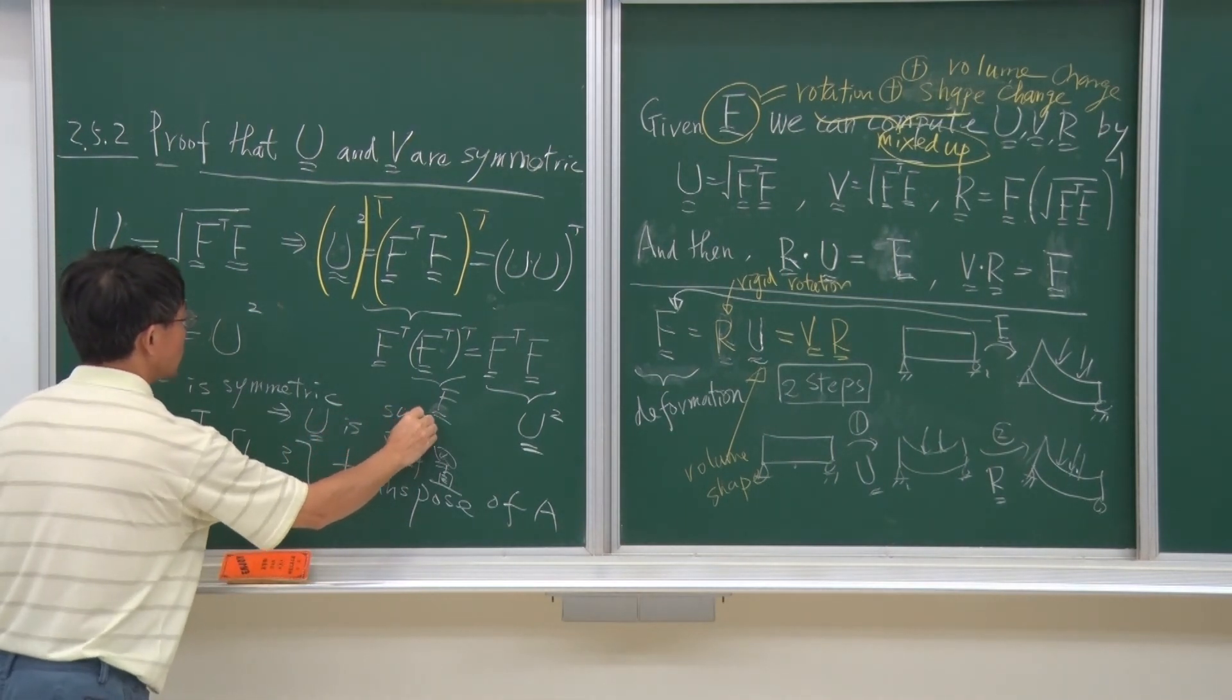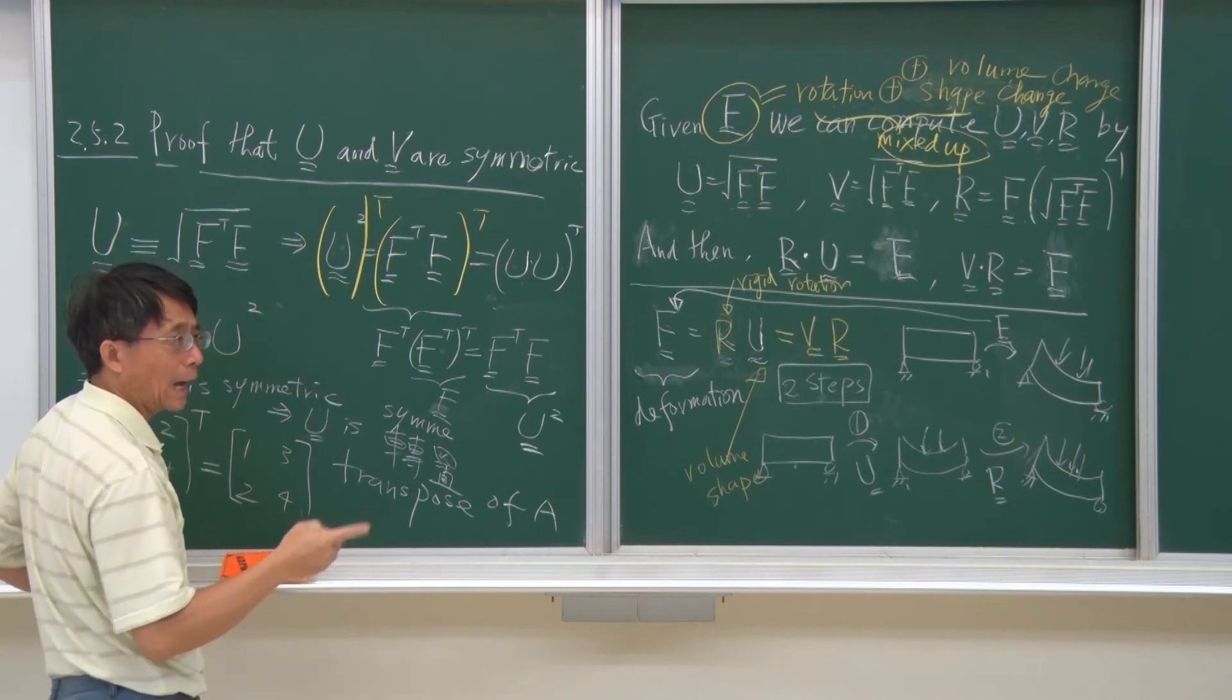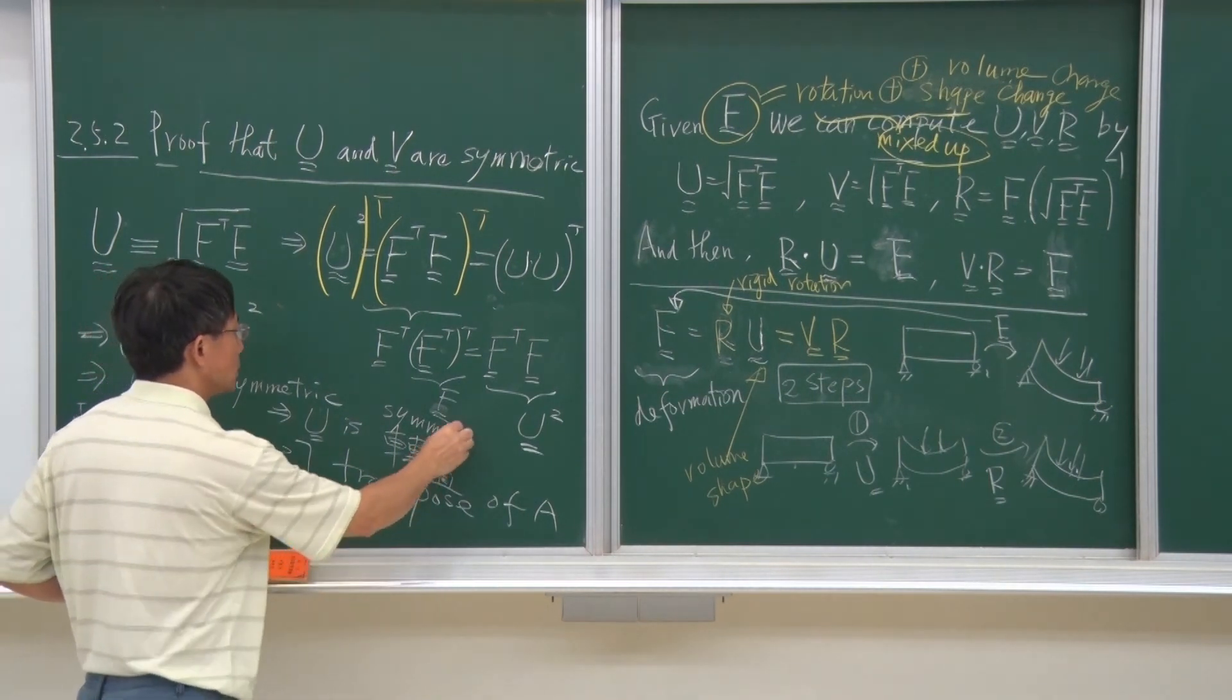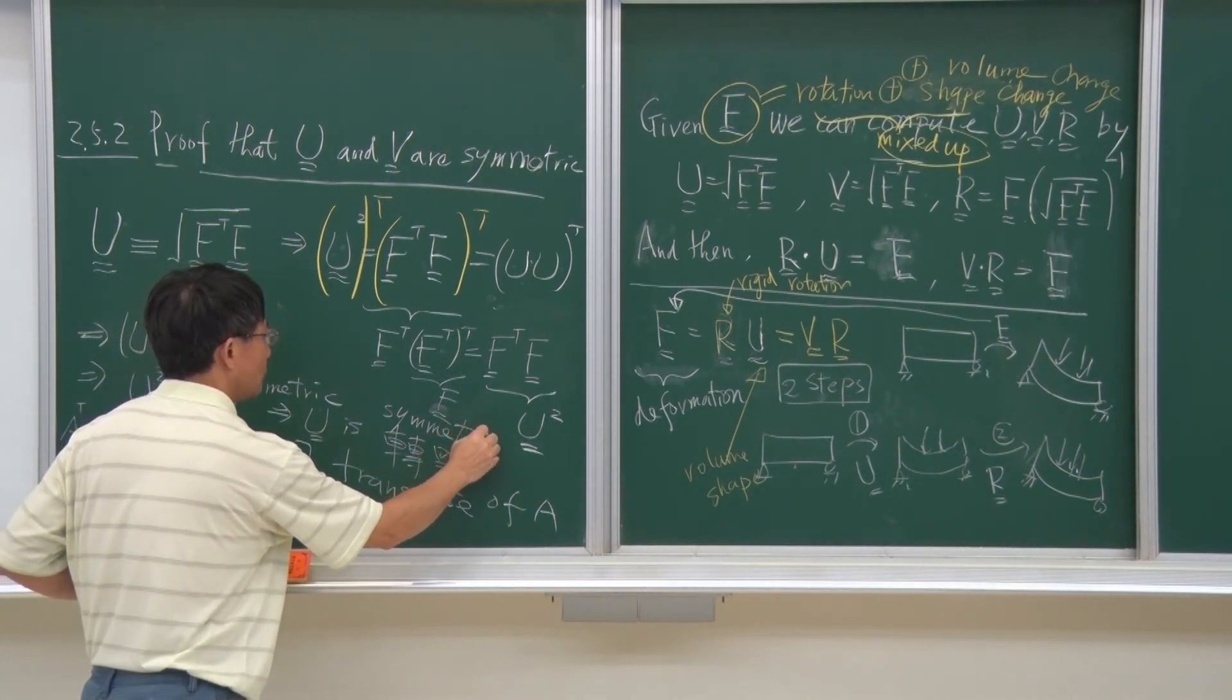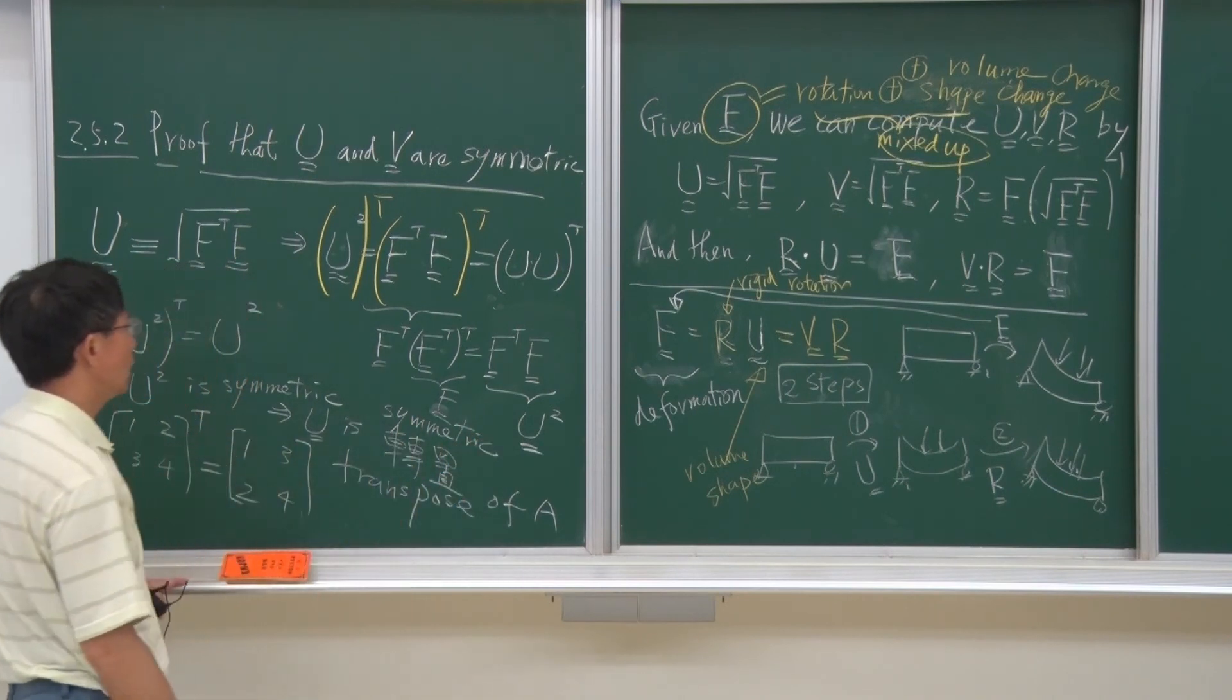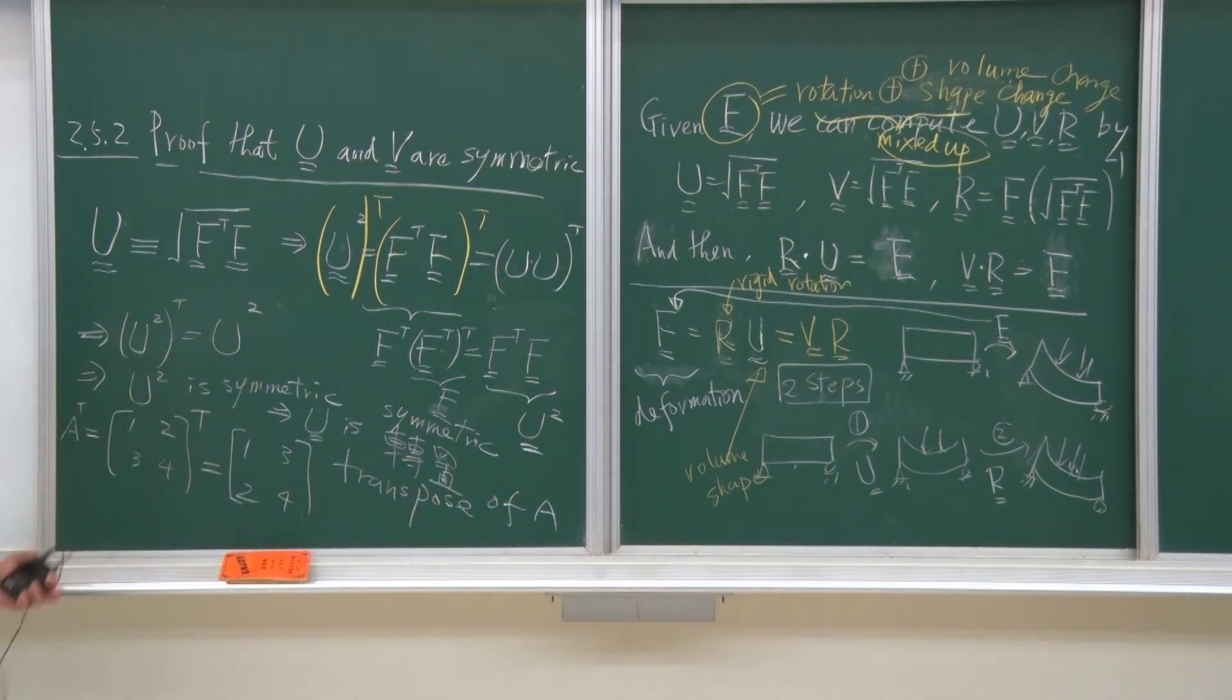We can use the diagonal decomposition or other approach to say this. But I just drop it here. So, U square is symmetric, and then U is symmetric, in the same way.